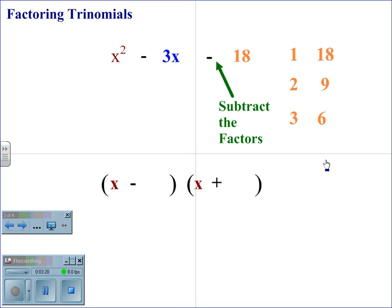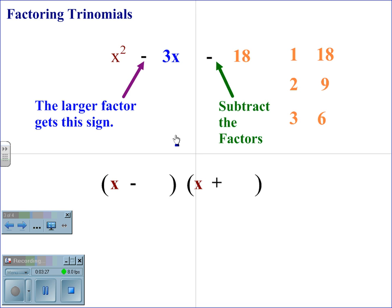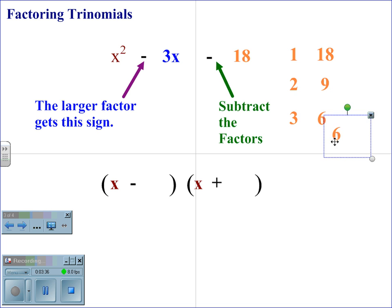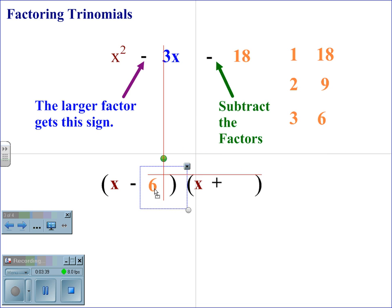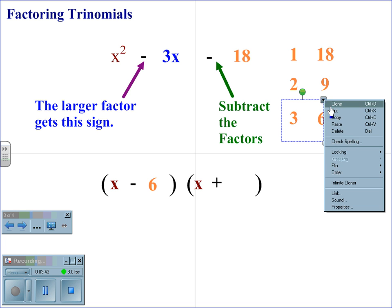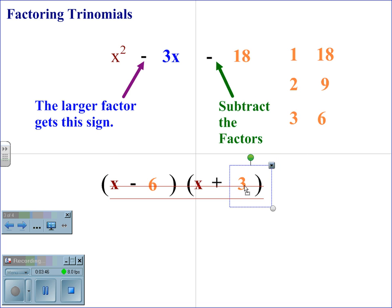In this case, we are subtracting the factors. To determine which sign each factor gets, the larger factor will get the first sign, which in this case is negative. Therefore, the factors that subtract to give you 3x will be 6 and 3. The 6 will go with the negative, as the larger factor. The 3 will go with the positive, being the smaller factor. So for the trinomial x squared minus 3x minus 18, the factor sets are x minus 6, x plus 3.